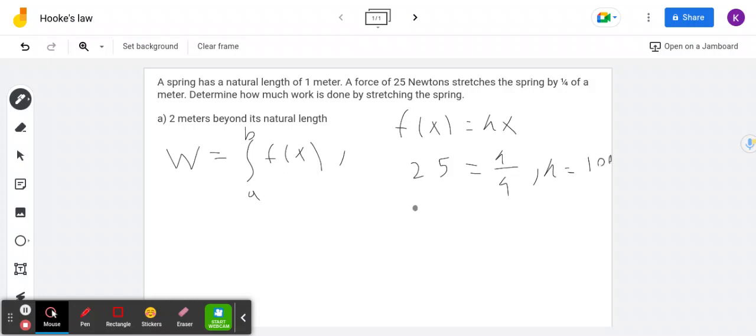Therefore, f(x), the force function in this case, is k times x, which is 100x. But we're not done because we want to find the work done. Work is the integral of force. So the work to stretch 2 meters is the integral from 0, the original position, to 2 of 100x dx.